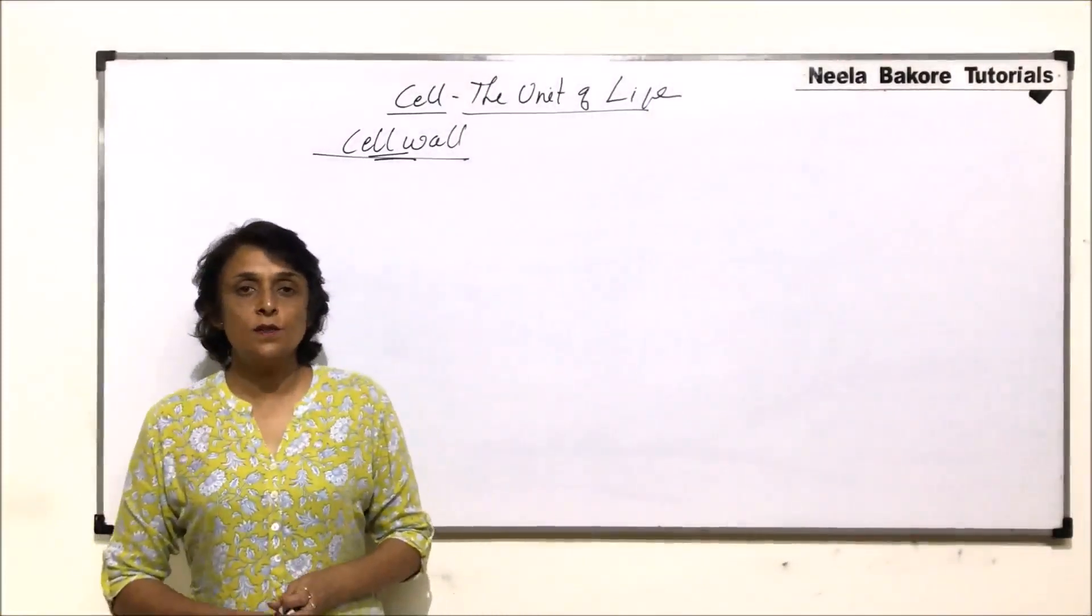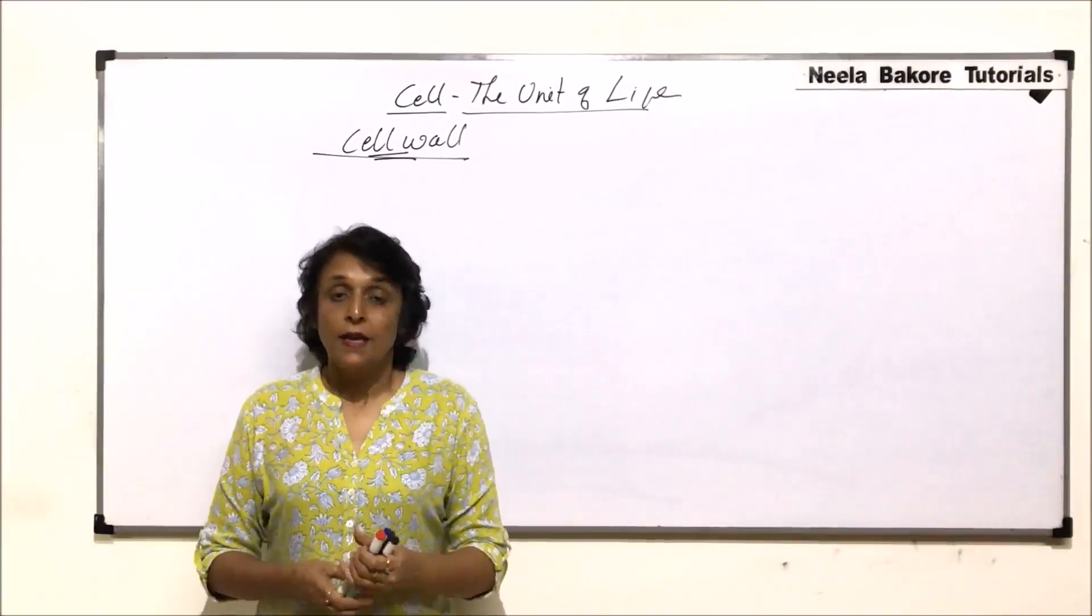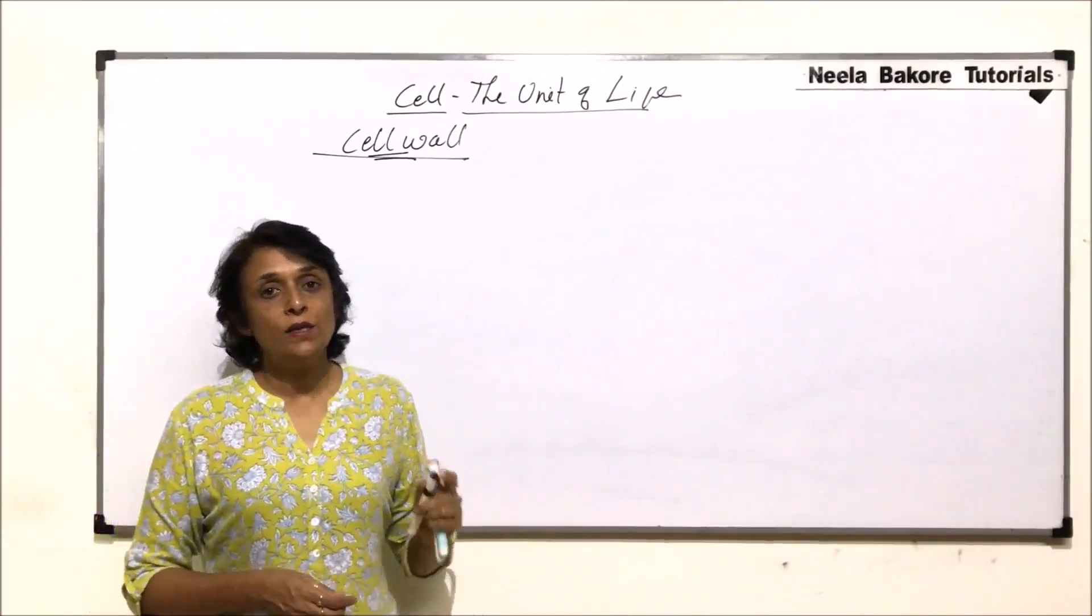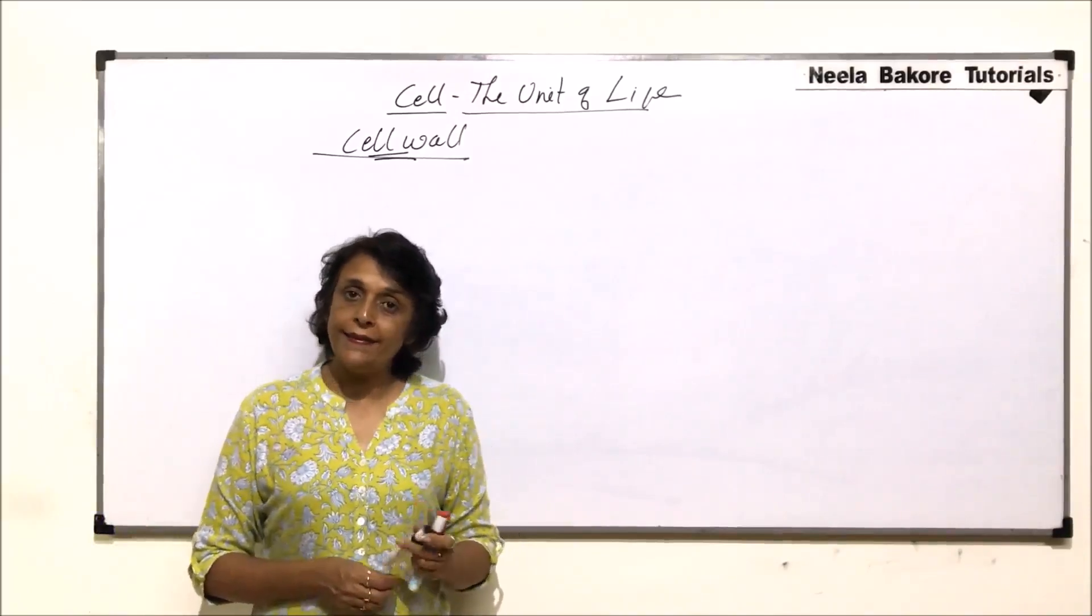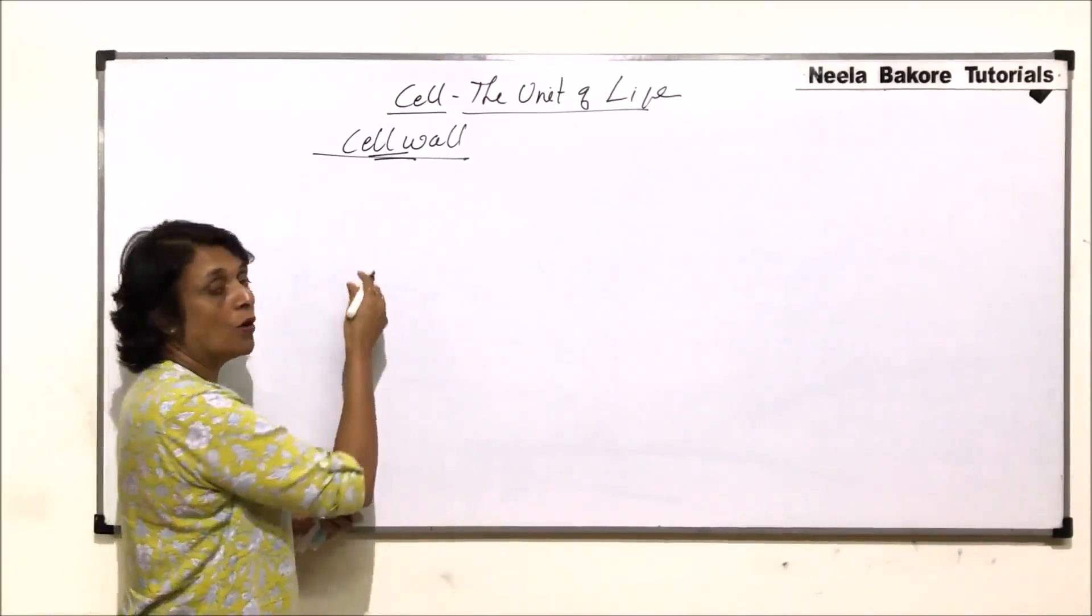In the previous part we understood the structure of cell wall in case of plant cells. Now we would take up how this cell wall is formed and then the functions which are performed by the cell wall.